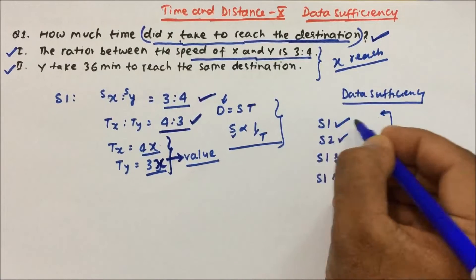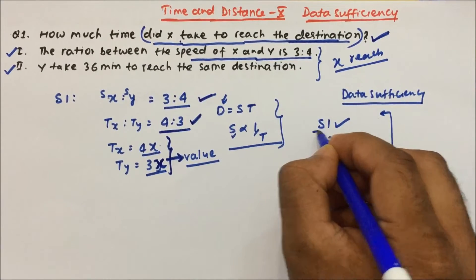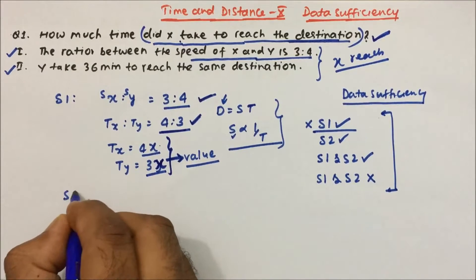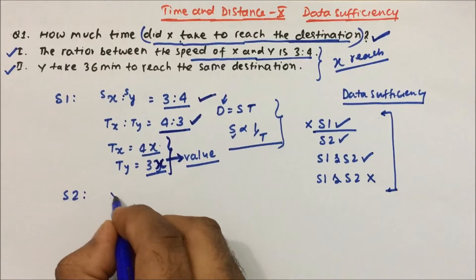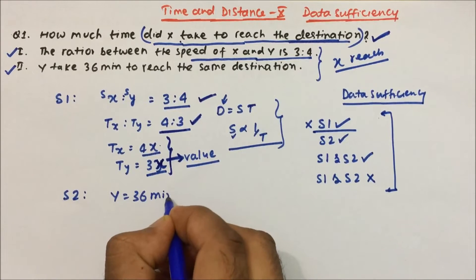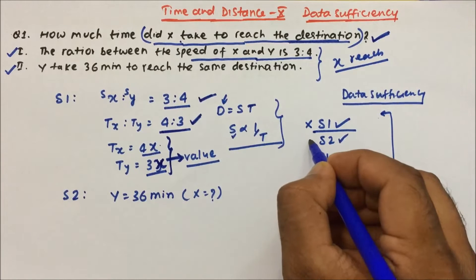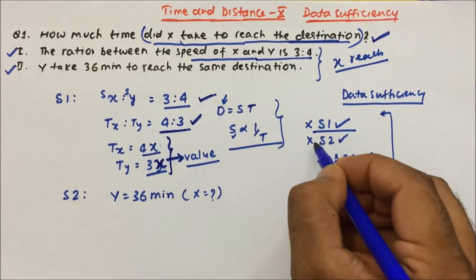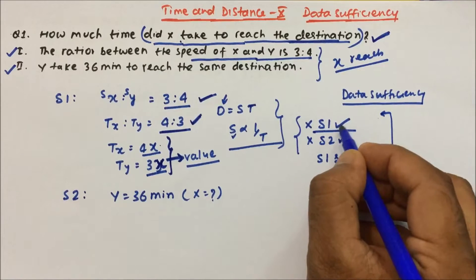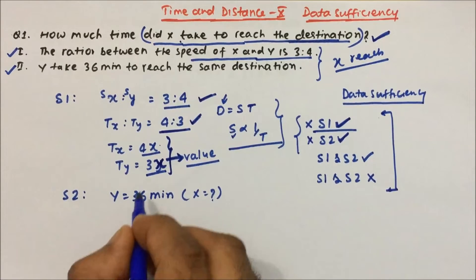Statement 1 alone is not sufficient. Now, Statement 2 says y takes 36 minutes. If only y's time is given, we cannot tell how much time x will take. So Statement 2 alone is also not sufficient to answer the question.